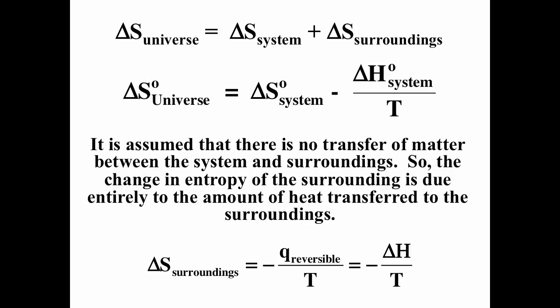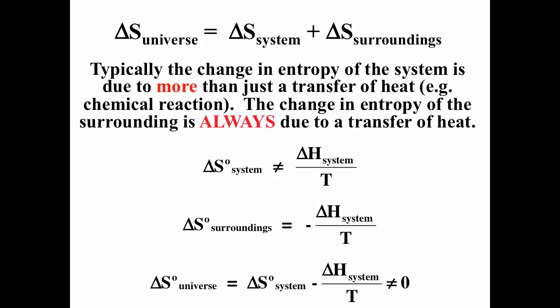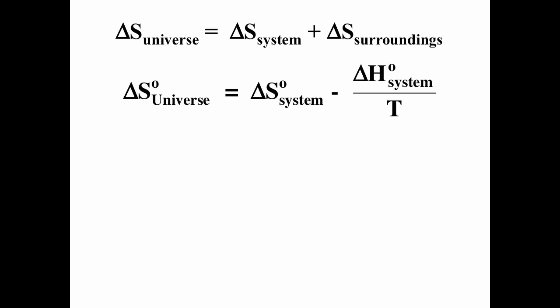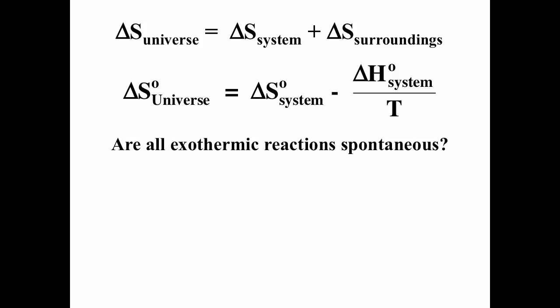ΔS_universe = ΔS_system + ΔS_surroundings. Substituting −ΔH/T for ΔS_surroundings gives ΔS_universe = ΔS_system − ΔH/T. This is a powerful result: from the system's properties alone we can determine the entropy change of the entire universe. Remember that ΔS_system in a chemical reaction is governed by bond breaking and forming — not just heat — while ΔS_surroundings is only due to heat.